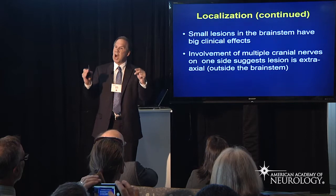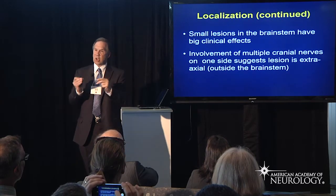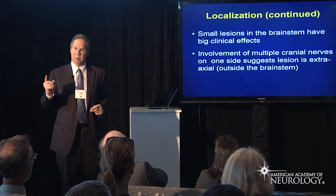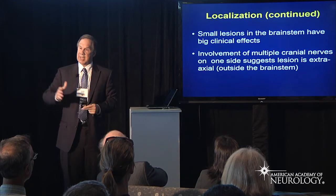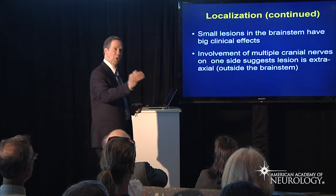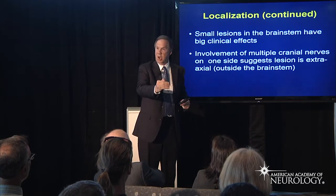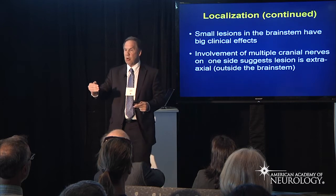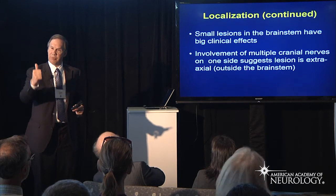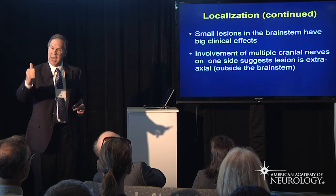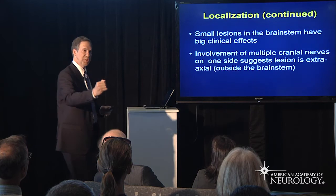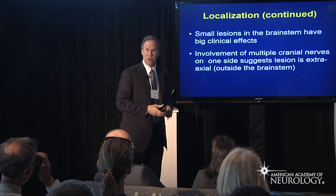Because we are in a highway, small lesions can cause devastating effects. The final important rule: because the brainstem is a highway carrying motor and sensory information from the body, if you have multiple cranial nerve palsies without any motor or sensory dysfunction in the body, the lesion lies outside the meat of the brainstem in the subarachnoid space, and a lumbar puncture is necessary to determine the etiology. Thank you.